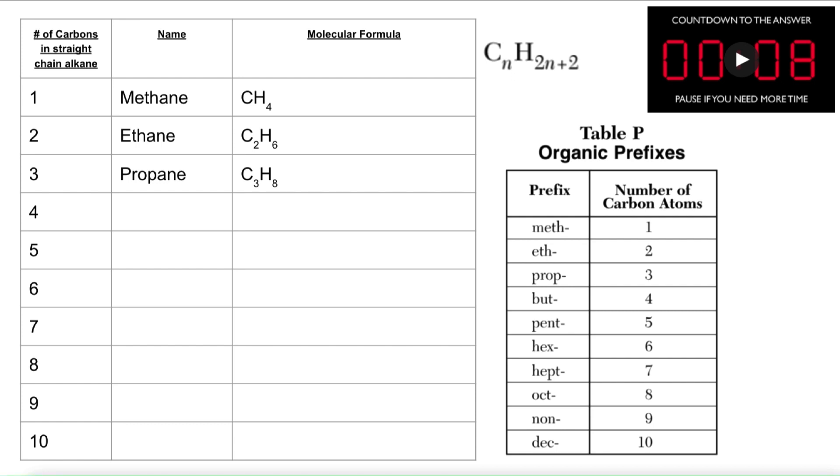So butane would be the name of four carbon alkane. I would write C4H10 because 4 times 2 is 8 and 8 plus 2 is 10.